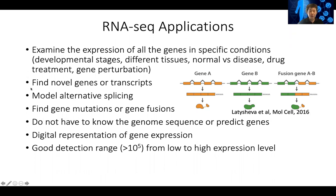RNA-seq can also be used to identify novel genes or transcripts. For example, in the human genome people have annotated around 20,000 genes and probably 50,000 transcripts. But doing RNA sequencing, you might find a region of the genome which previously was not annotated to have a gene, but clearly there is RNA that you sequenced out — something is happening at that location which is making an RNA. So this can be used to identify novel genes or novel transcripts.